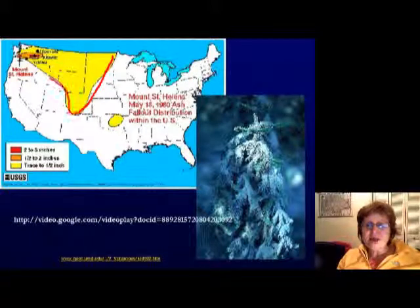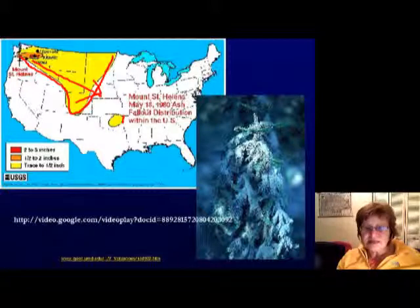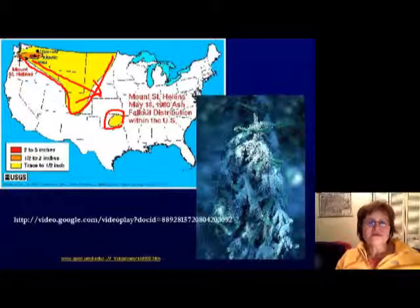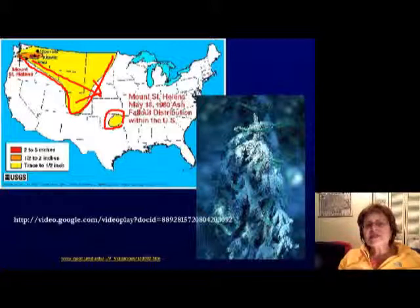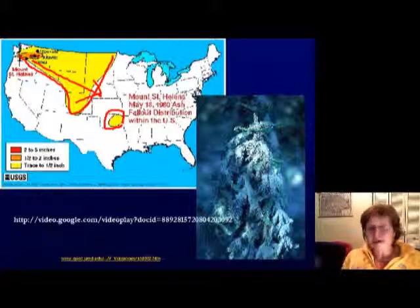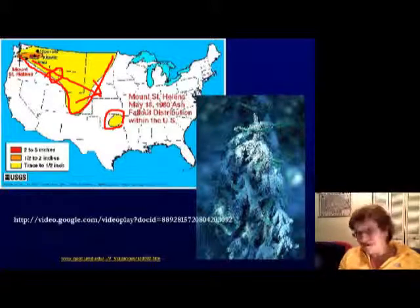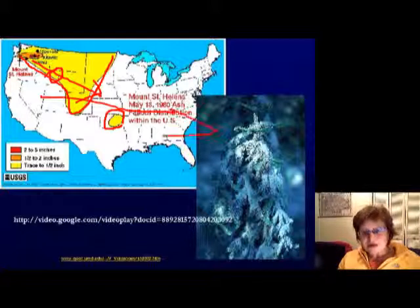This map shows the ash cloud coverage from Mount St. Helens — just one cubic kilometer of material produced that much ash across the US. The eruption was relatively small. Imagine if Yellowstone erupted with 1,000 to 2,500 cubic kilometers — even Virginia would be covered in volcanic ash.